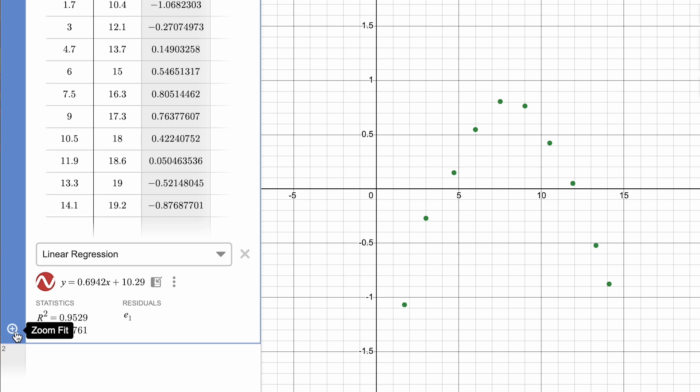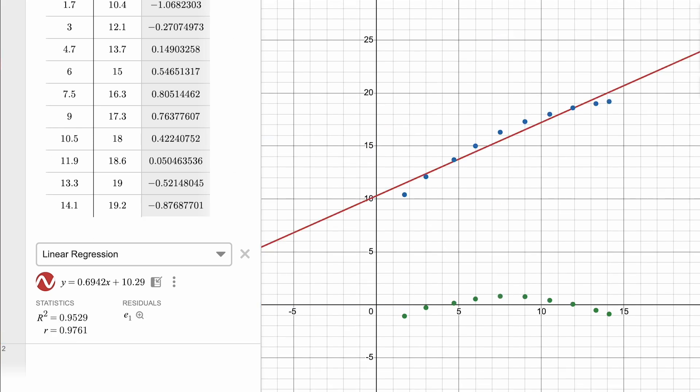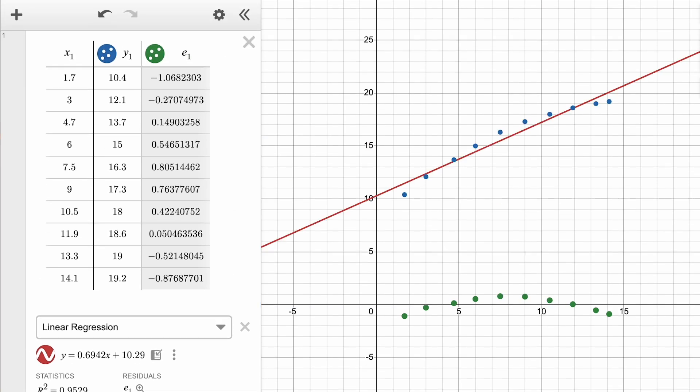We can then use the Zoom Fit icon in the bottom left of the expression line to automatically adjust the graph settings back to best display our data.